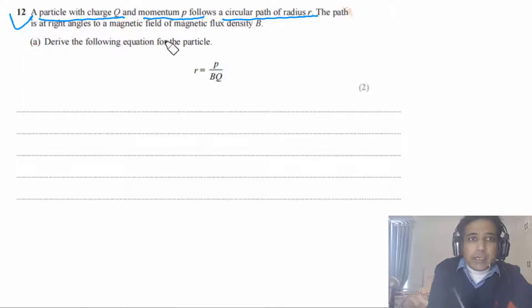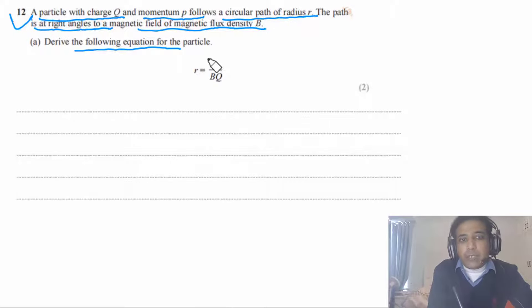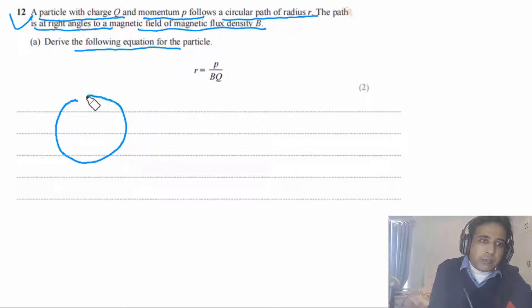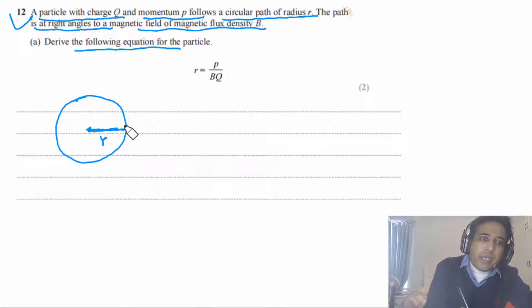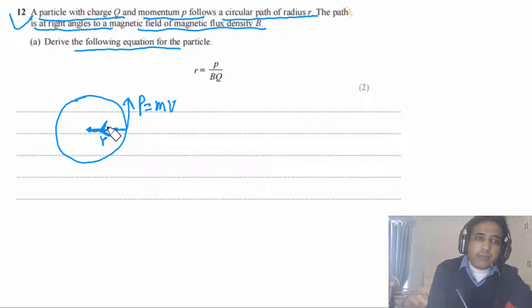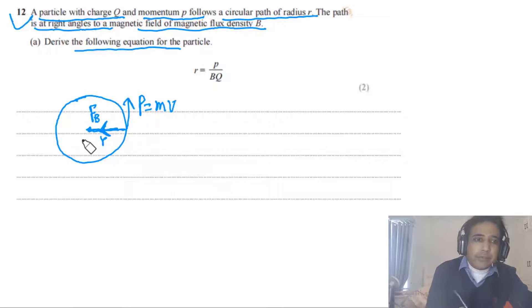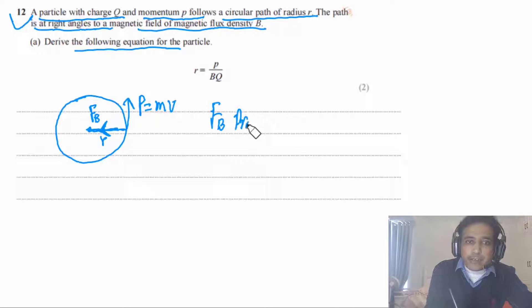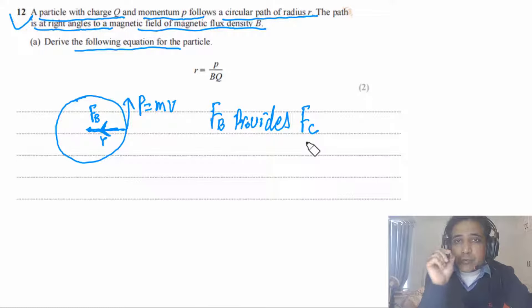Question 12: a particle with charge Q and momentum p follows a circular path of radius r, perpendicular to a magnetic field B. We derive r = p/(BQ). The particle moves in a circle, so there is a centripetal force. This is provided by the magnetic force: BQv = mv²/r.